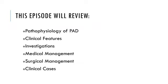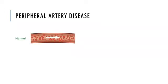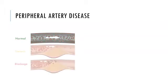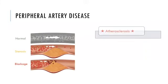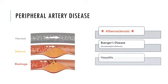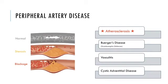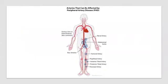Peripheral arterial disease or PAD is the narrowing or blockage of peripheral arteries resulting in reduced blood flow. Atherosclerosis is the most common cause, but rarely it can be caused by Buerger's disease, vasculitis, and cystic adventitial disease. The arteries of the lower limb are most commonly affected.